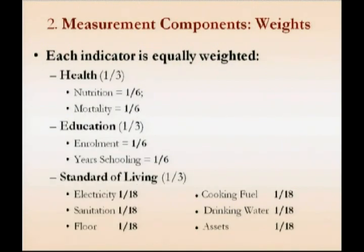Within each dimension, we take what James called the nested weight. At this point, we have equal weights between each indicator within the dimension. Because we have two indicators in health and education, that means one-sixth is the weight on each of those four indicators. We have six for standard of living, so one-eighteenth is the weight on each of those six indicators.